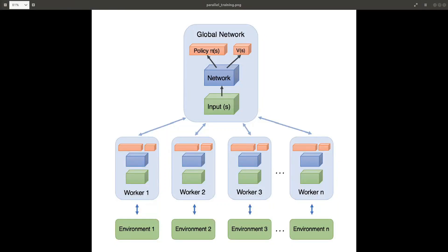Hi everyone. In this tutorial I will provide an implementation of the Asynchronous Advantage Actor-Critic algorithm in TensorFlow and Keras. I will use it to solve a simple challenge in the Pong environment, just for learning purposes. If you are new to deep learning and reinforcement learning, I suggest checking out my previous tutorials before going through this post in order to understand all the building blocks utilized here.